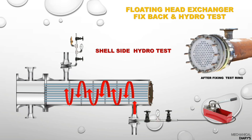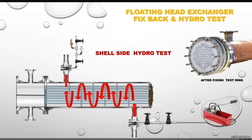While fixing the test ring, use Teflon gland packing — do not use graphite, as graphite may cause leakage during the hydrotest. Once the test ring is fixed, you can start pressurizing the shell side from the shell side bottom nozzle.